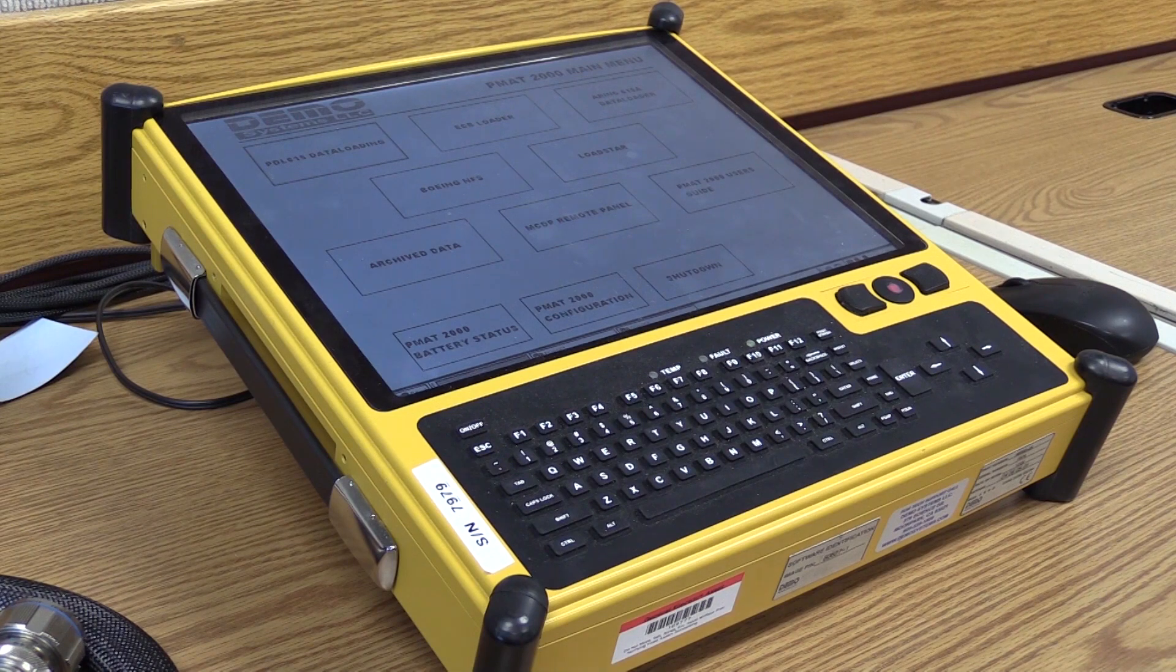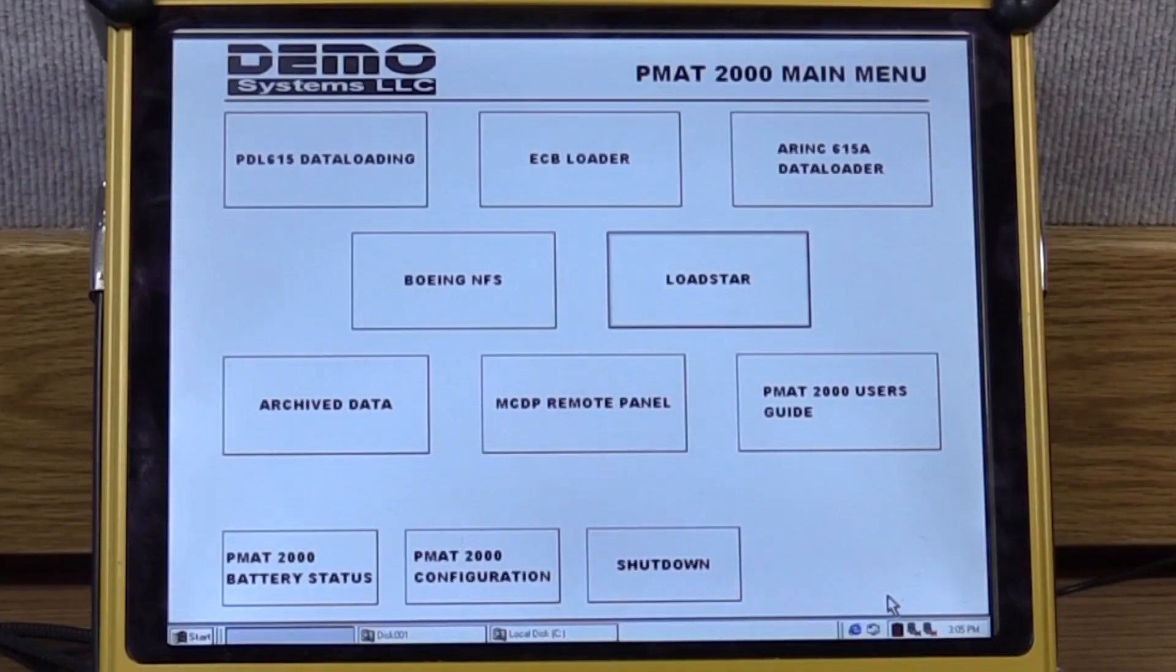The first thing to do is make sure that the EMU DLFF data config file is loaded on the PMAT. This file can be obtained either from the engine monitoring unit software load disk or from the product support engineer who requested this data retrieval.